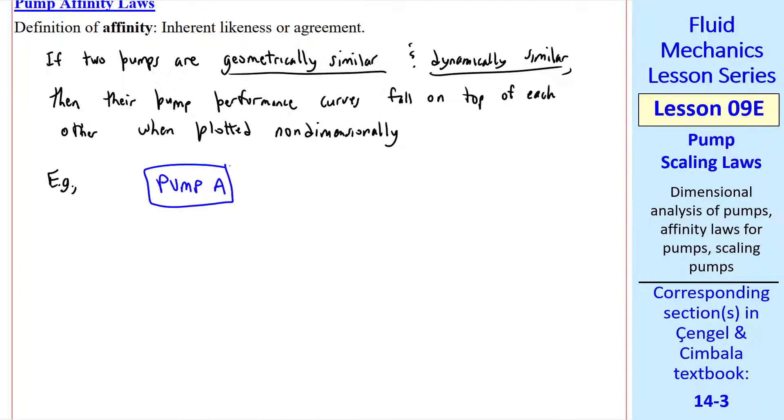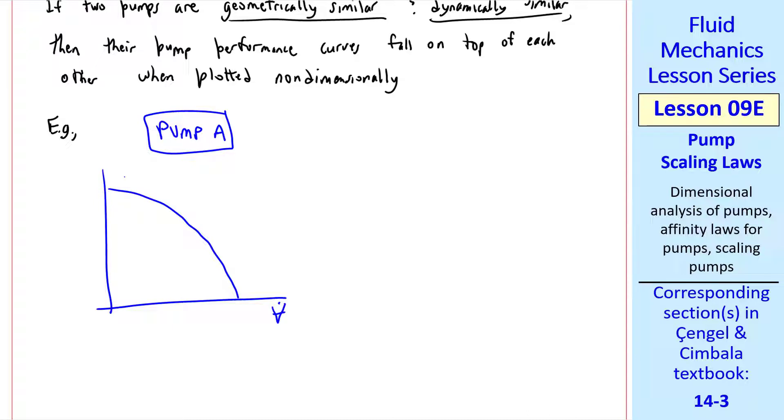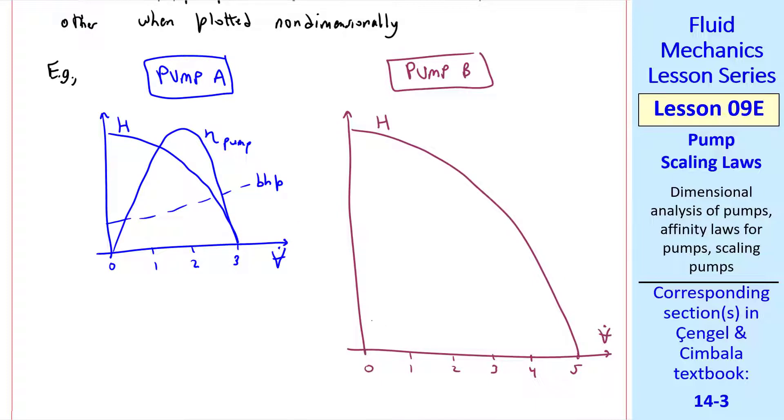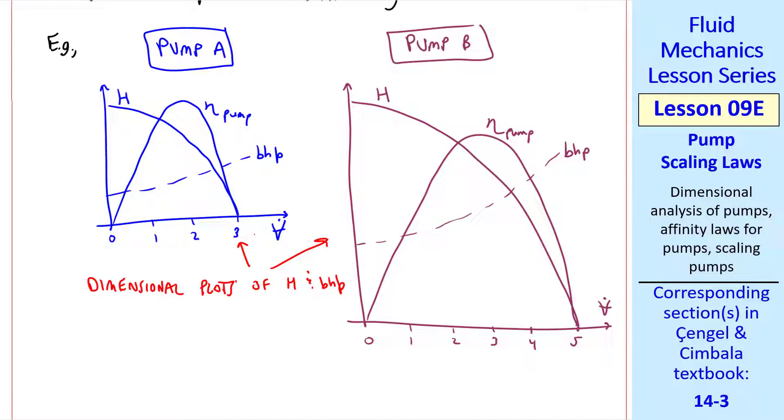I'll use blue for pump A. Suppose its performance curves look like this. This is the net head H, this is the efficiency of the pump, and this is the brake horsepower. Suppose pump B is a bigger, heftier pump, just a scaled up version of pump A. If we plot these on the same scale, in whatever units we're talking about, such as liters per minute, the free delivery of pump A is 3 and the free delivery of pump B is 5. We do likewise with the head and the brake horsepower. So that's the head curve, the BHP curve, and the efficiency curve. These are dimensional plots of H and BHP. Eta pump, of course, is already non-dimensional.